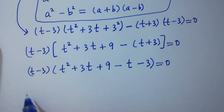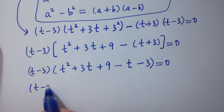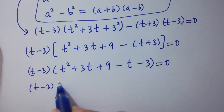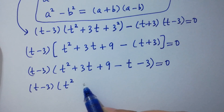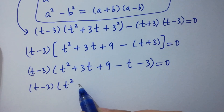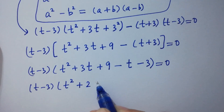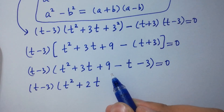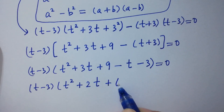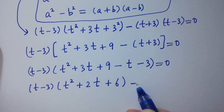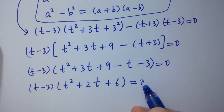So t minus 3 times t square plus 3t plus 9 minus t minus 3 equal to 0, which simplifies to t minus 3 times t square plus 2t plus 6 equal to 0.